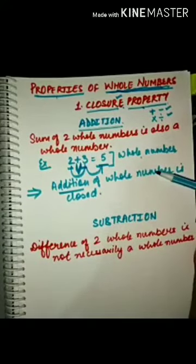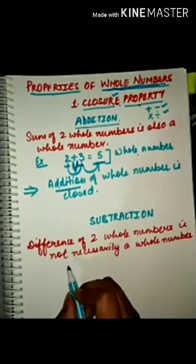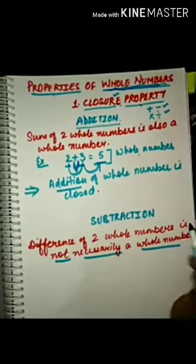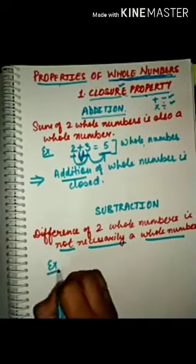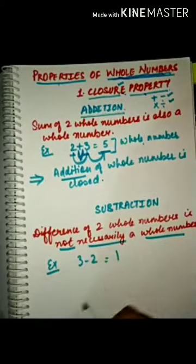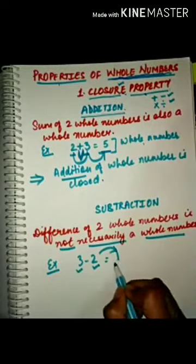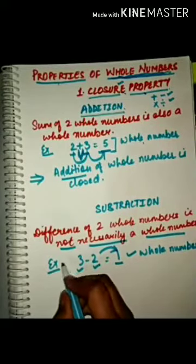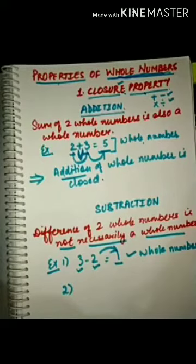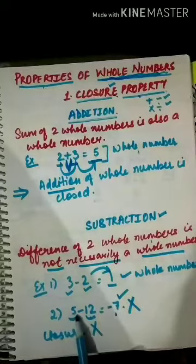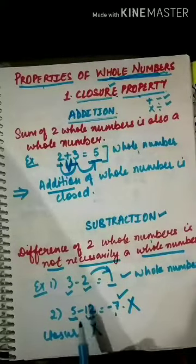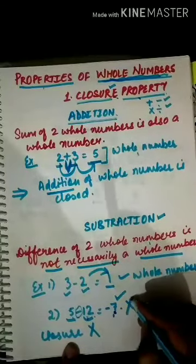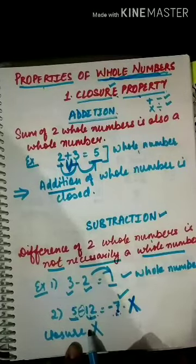Now let's check closure property for subtraction. This property does not hold good for whole numbers all the time. For example, 3 minus 2 equals 1, which is still a whole number, so closure property holds here. But consider 5 minus 12 — both 5 and 12 are whole numbers. The answer is minus 7, which is not a whole number. So closure property does not hold good for subtraction.